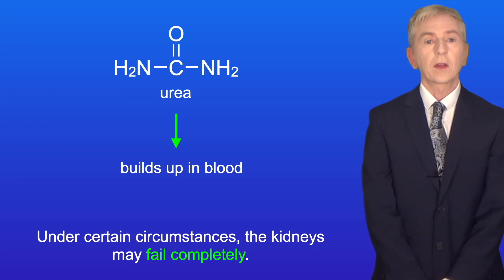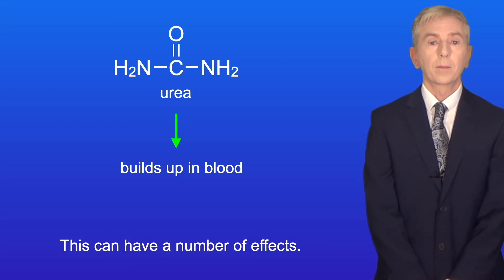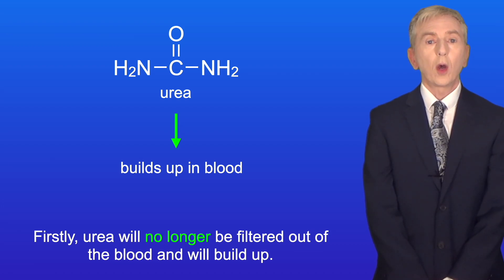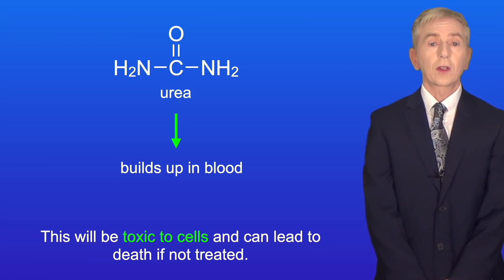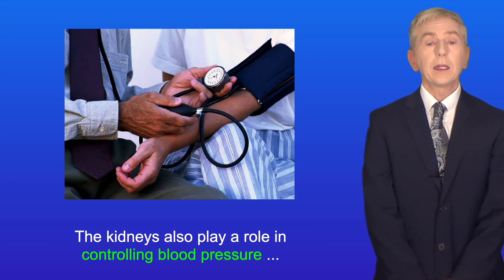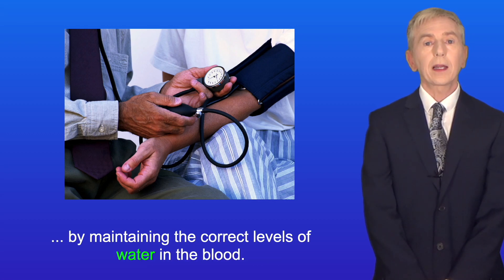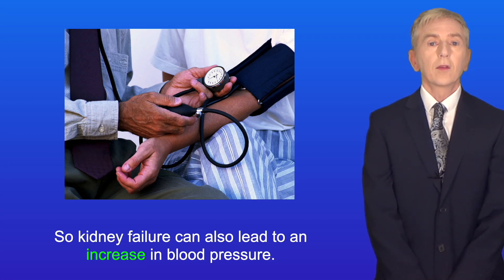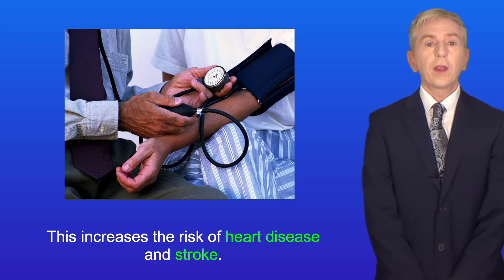Now, under certain circumstances, the kidneys may fail completely. This can have a number of effects. Firstly, urea will no longer be filtered out of the blood and will build up. This will be toxic to cells and can lead to death if not treated. The kidneys also play a role in controlling blood pressure by maintaining the correct levels of water in the blood. So, kidney failure can also lead to an increase in blood pressure, and this increases the risk of heart disease and stroke.